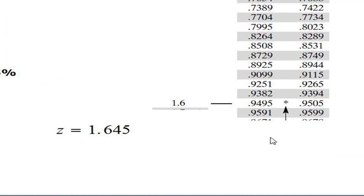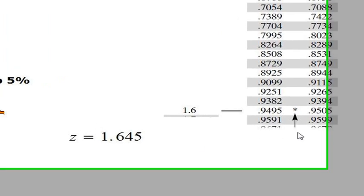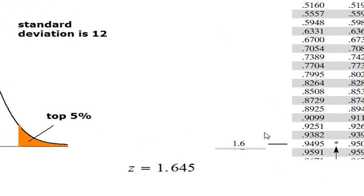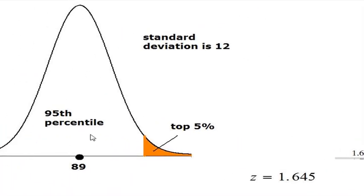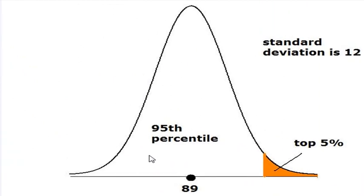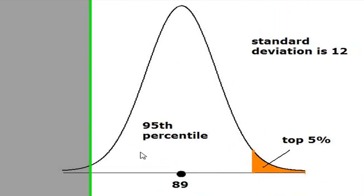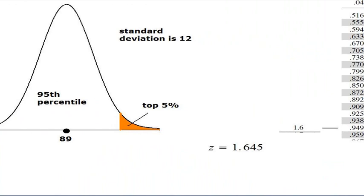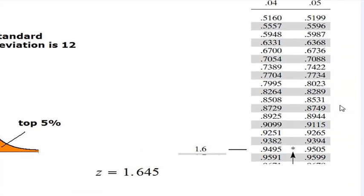If we go to the Z table, what we are going to do this time is find a value of Z such that the area to the left of that value is 95%, or as a proportion, 0.95. If you look for 0.95 in this region, you shall see this.